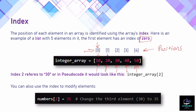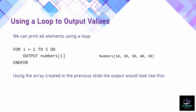We can also modify elements after the array has been created. So if I want to change the number in position two — which is currently 20 — I can assign 35 to that position. In pseudocode I would use an arrow, and the number 20 will change to 35. We use the assignment statement to modify elements after we've created the array, using square brackets with the index to point to the correct position.